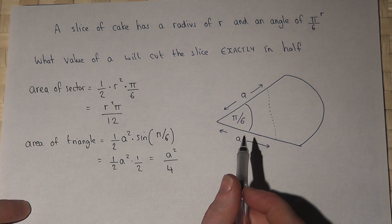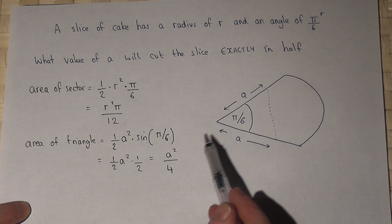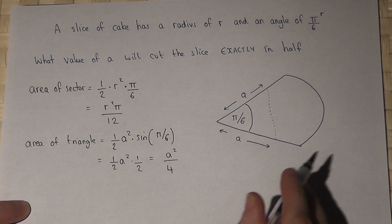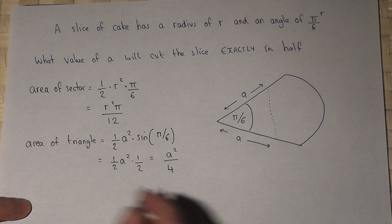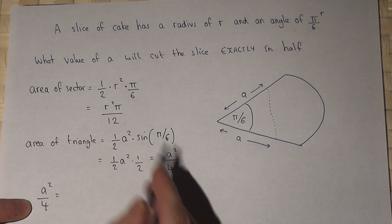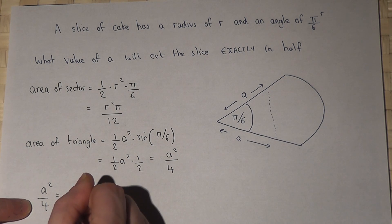Now the question is what value of A makes this half the area of the entire sector, so we want A squared over 4 to equal a half of that, so R squared pi over 24.